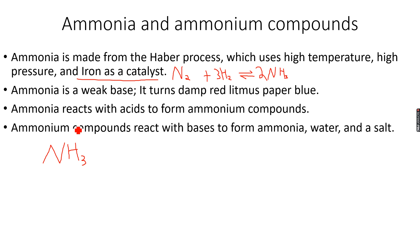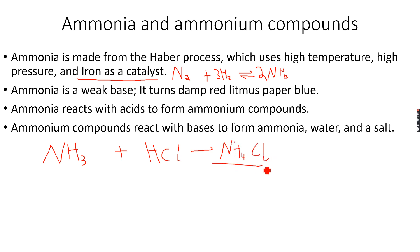Because ammonia is a base, it reacts with acids to form ammonium compounds. For example, when ammonia reacts with hydrochloric acid, we get ammonium chloride. These ammonium compounds contain the ammonium ion, NH₄⁺, which is formed when NH₃ combines with an H⁺ ion — because NH₃ is a base, it accepts protons.